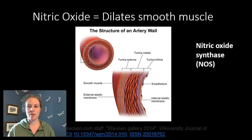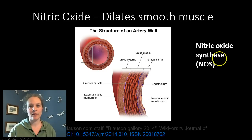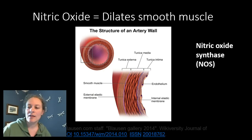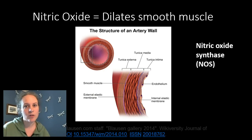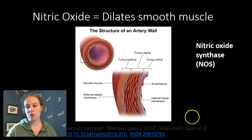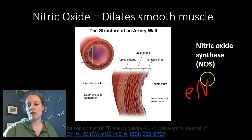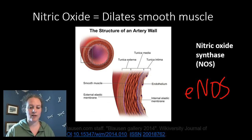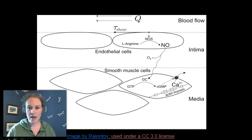Nitric oxide is made by an enzyme called nitric oxide synthase. When we see '-ase' at the end, that tells us it's an enzyme. There are three different types of nitric oxide synthase. We're not going to worry too much about the other two, but the one we're specifically focused on is called endothelial nitric oxide synthase, or eNOS — because that's the kind that's made in the endothelium. Let's have a look at how that happens.